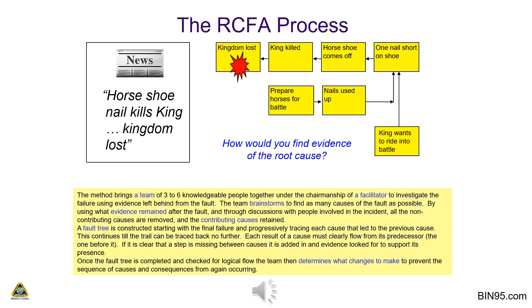The RCFA method brings a team of three to six knowledgeable people together under the chairmanship of a facilitator to investigate the failure using evidence left behind. The team brainstorms to find as many causes as possible, then removes non-contributing causes, retaining only contributing ones. A fault tree is constructed from the final failure, progressively tracing each cause back until the trail goes no further. Missing steps between causes are added in and supported with evidence, and once the fault tree is logically complete, the team determines what changes to make.